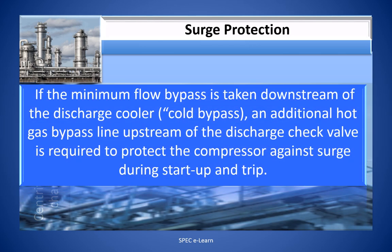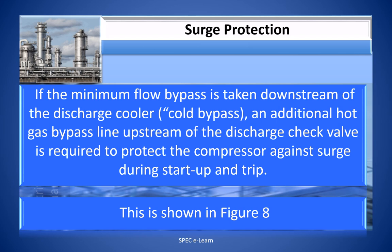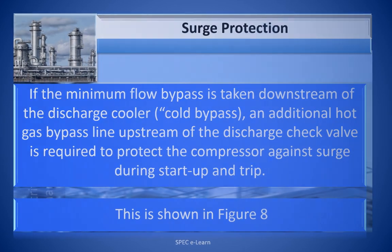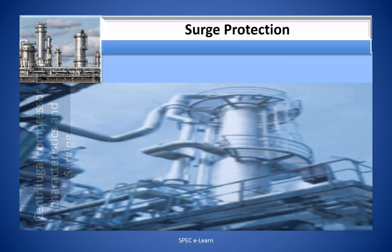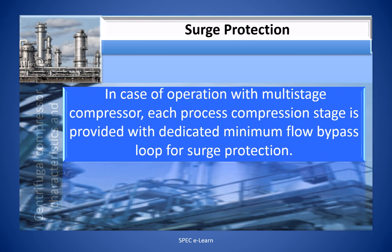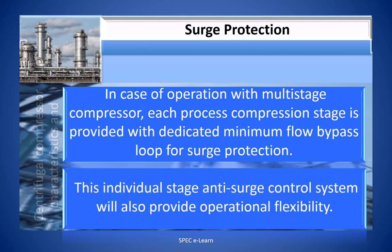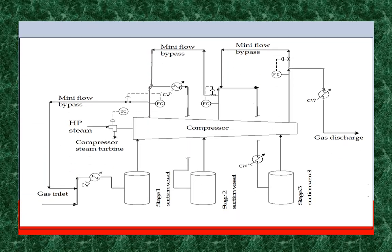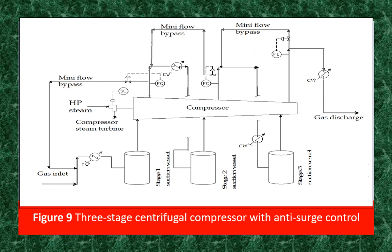If the minimum flow bypass is taken downstream of the discharge cooler — otherwise called cold bypass — an additional hot gas bypass line upstream of the discharge check valve is required to protect the compressor against surge during startup and shutdown, as shown in figure 8. In the case of operation with multi-stage compressors, each process compression stage is provided with a dedicated minimum flow bypass loop for surge protection. This individual stage anti-surge control system will also provide operational flexibility. This figure illustrates a three-stage compressor with a dedicated anti-surge control system for each stage, where the minimum flow bypass is taken from upstream of the non-return valve and cooled before it is returned to the suction vessel.